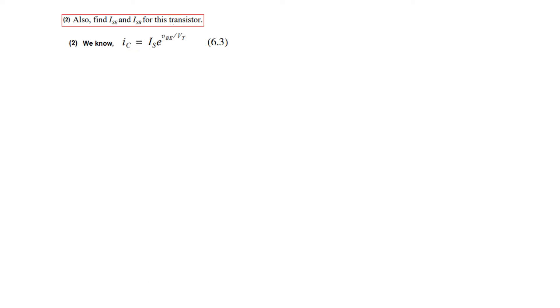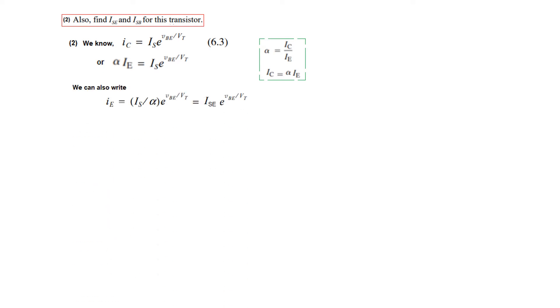Part 2 says we have to find ISE and ISB for the transistor. We know the formula IC equals ISE times e raised to VBE over VT. We also know that IC can be written as alpha times IE. Plugging in this value, alpha IE equals ISE times e raised to VBE over VT. From here, IE equals IS over alpha times e raised to VBE over VT, and we name IS over alpha as ISE — the saturation current of the emitter.